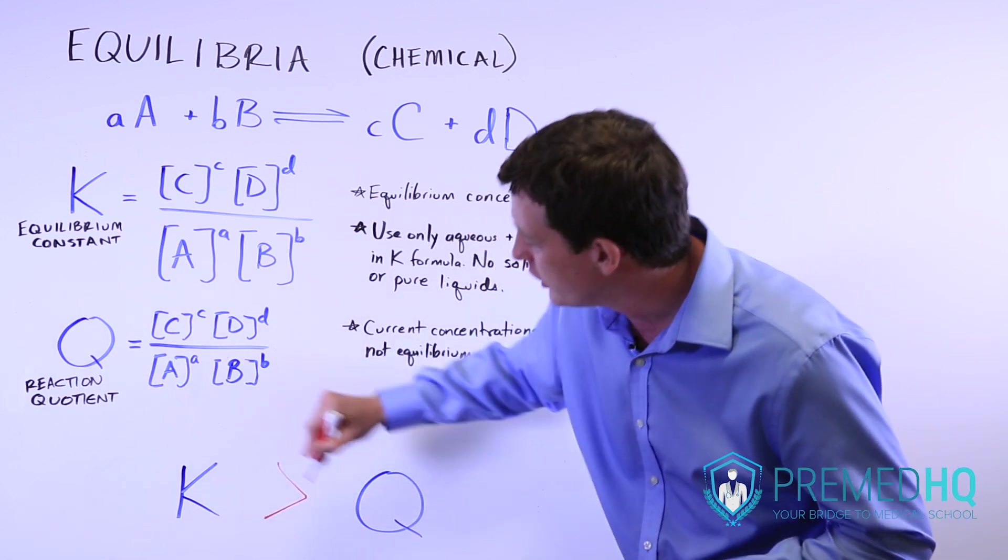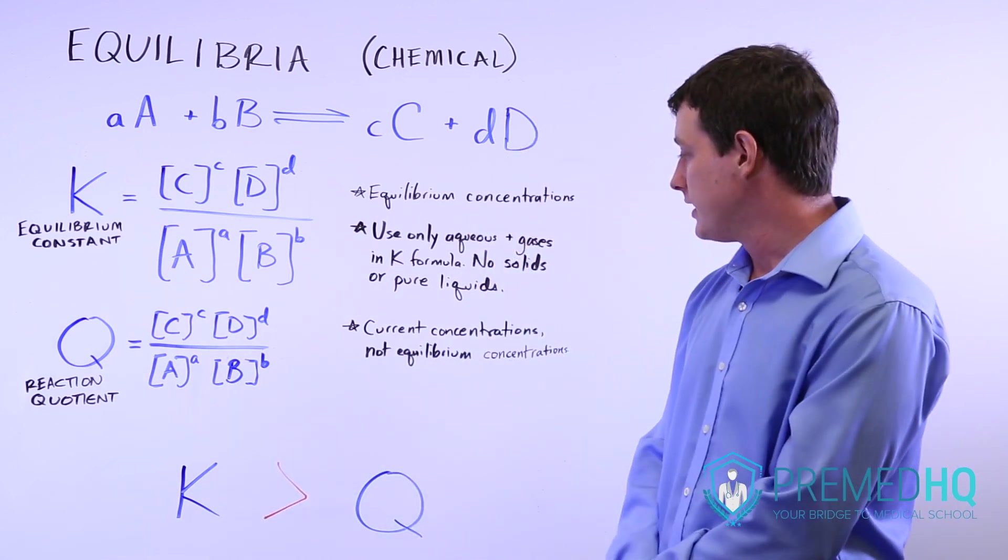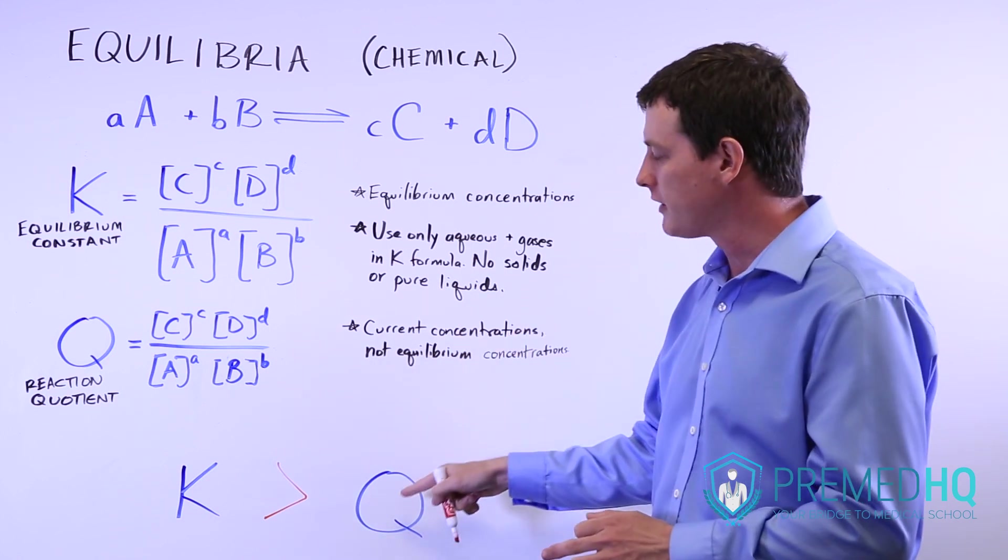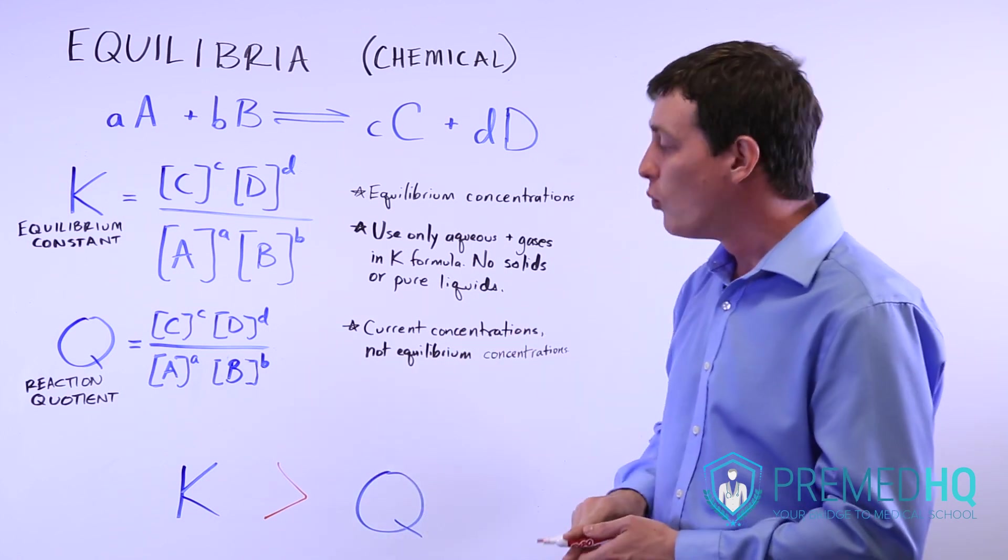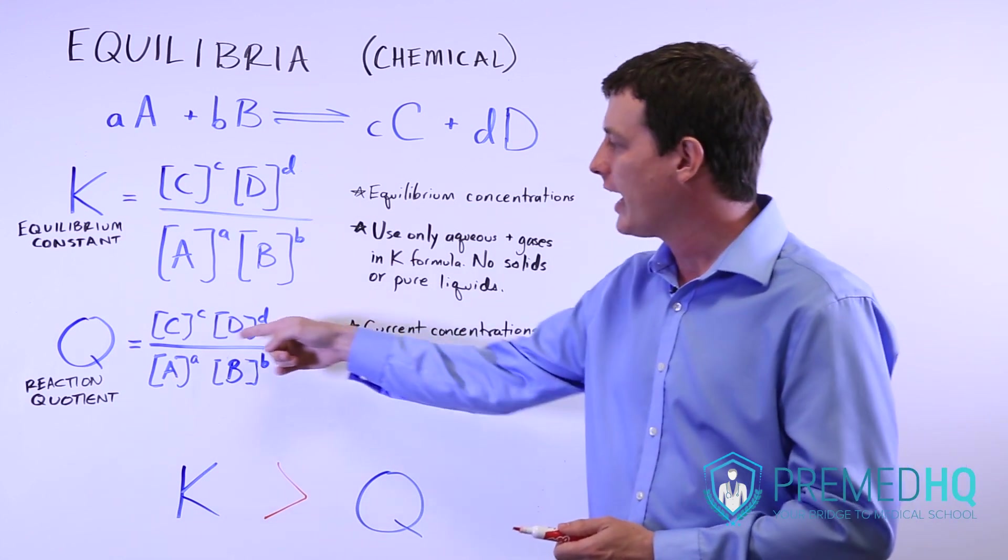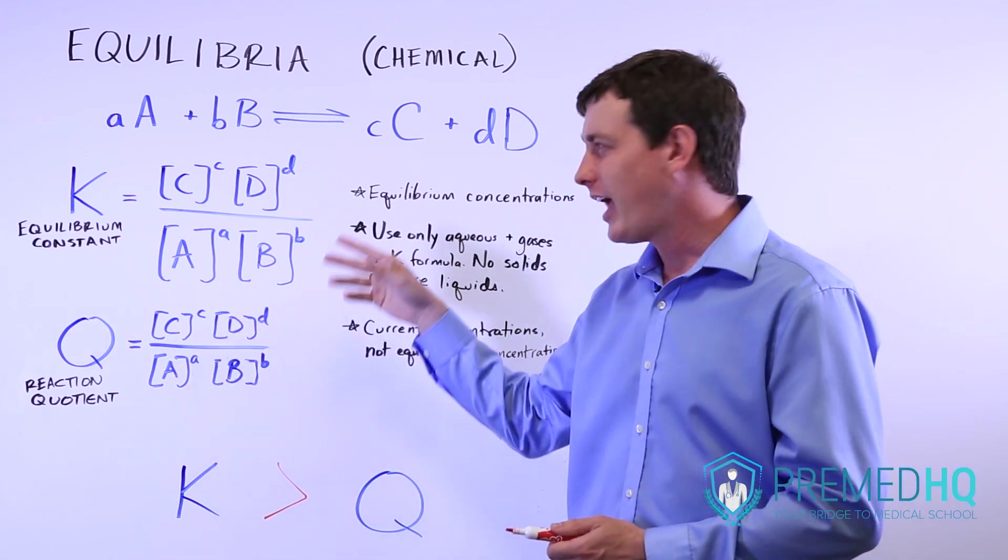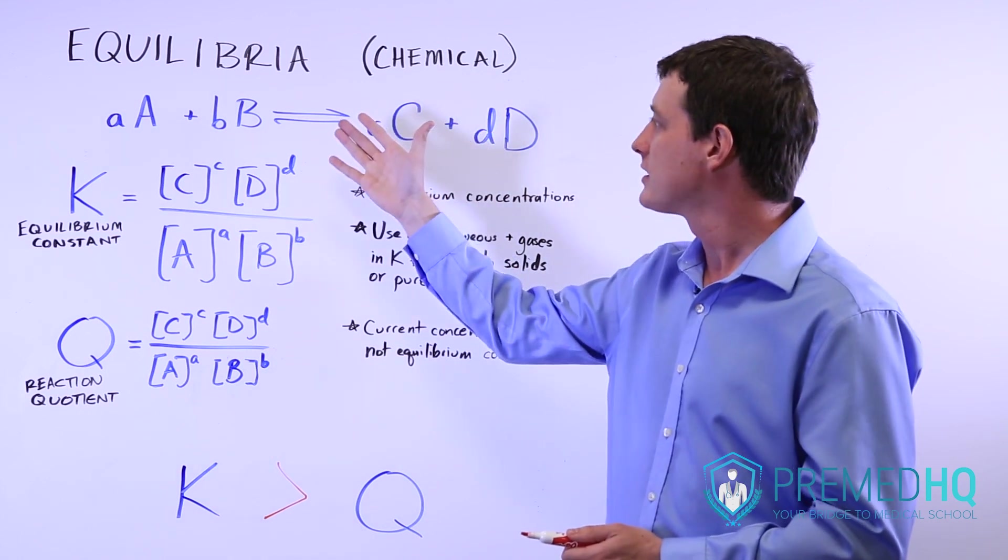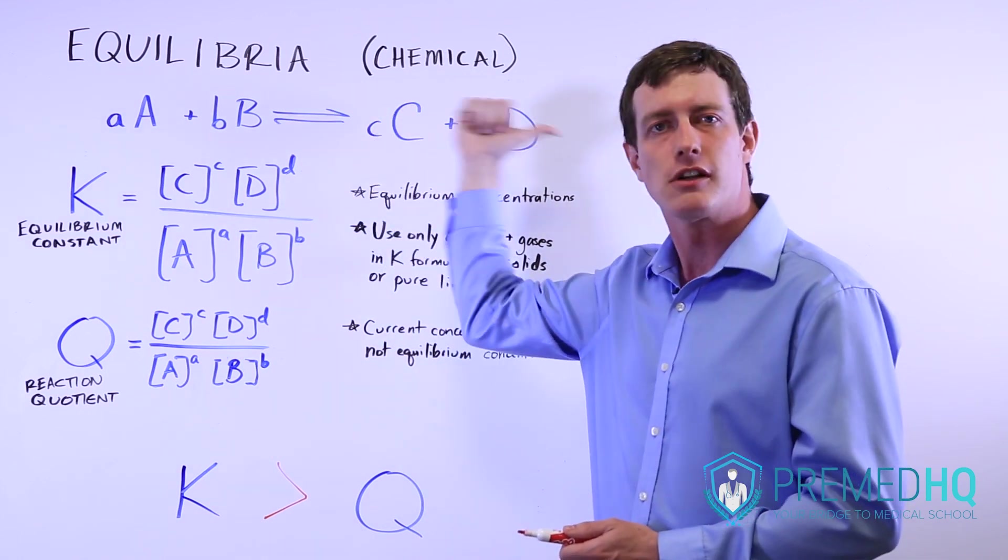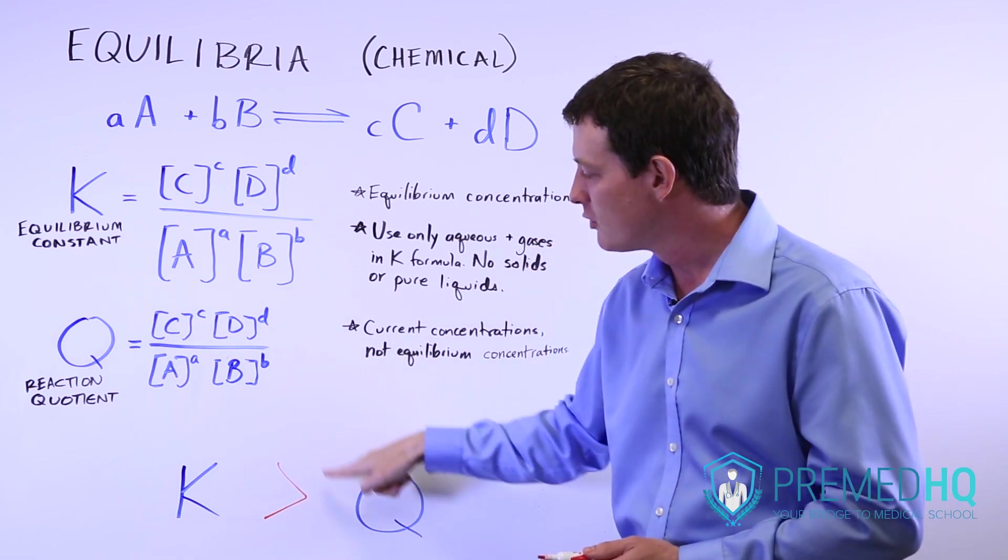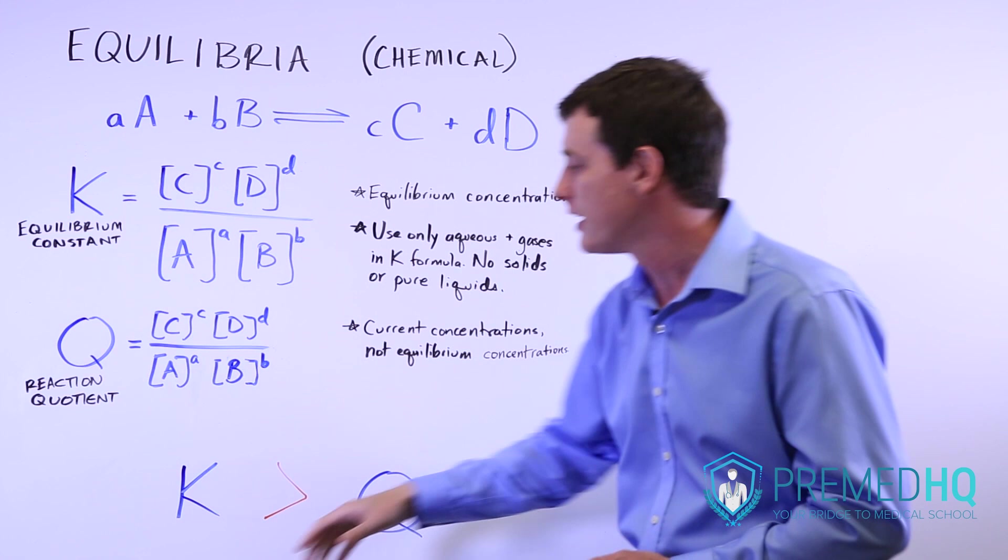So if K is greater than Q, then what that means is that the reaction will move to the right. And that holds true. If Q is less than K, what that means is that you don't have enough products or you have way too many reactants, and what the reaction does to compensate for that is it moves to the right so that it approaches equilibrium. So if K is greater than Q, then this greater than symbol also serves as an arrow.